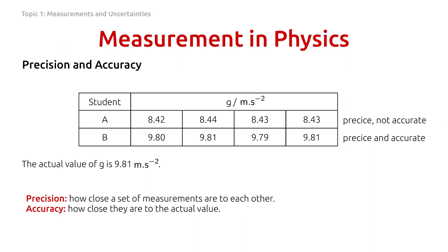Accuracy refers to how close they are to the actual value. The data from student B in this case is more accurate.